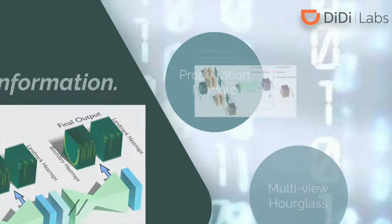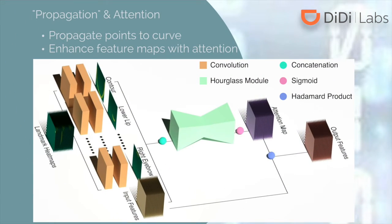Concretely, we first devised a propagation module using a series of convolutional operations to propagate point to curve, that is, propagate landmark heatmaps to boundary heatmaps, with the latter heatmaps as our structural information.